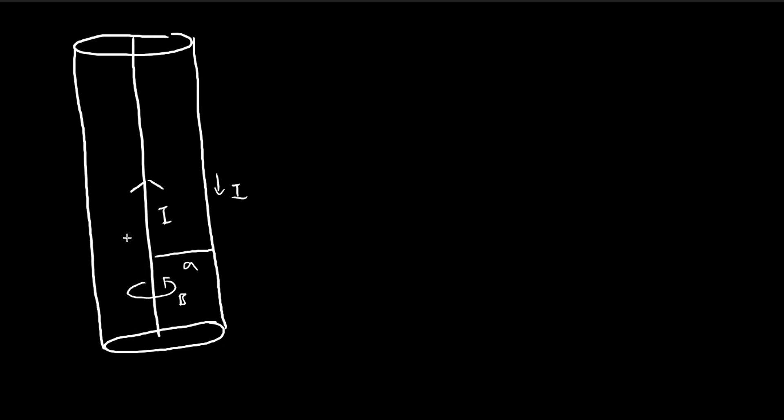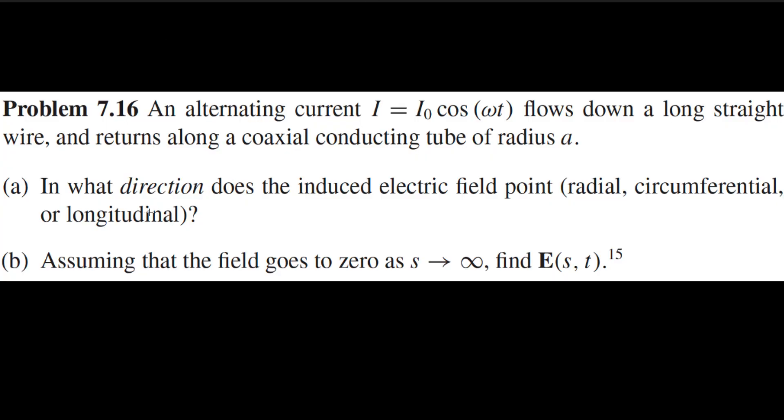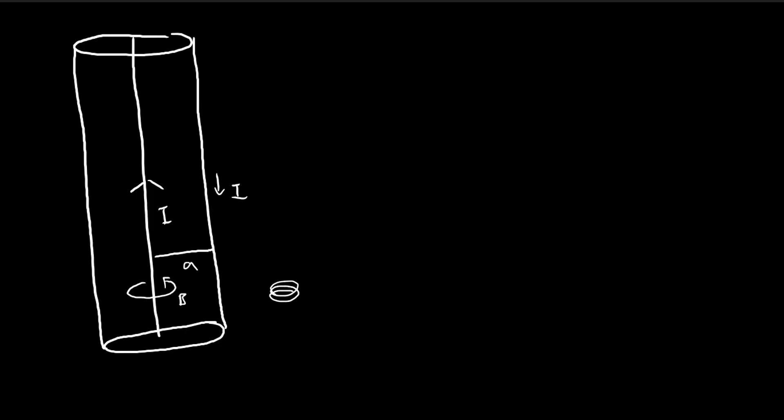So first we need to find the direction of that field, and the answer is actually it's longitudinal. The reason is by the same argument as the case of the solenoid. You can see a kind of parallel between Ampere's law and Faraday's law. In Ampere's law, you have the current that's generating the magnetic field. And in Faraday's law, you have this magnetic field that's generating the induced electric field. They work the same way. If you look at the Maxwell's equations of the two laws, they're pretty much the same.